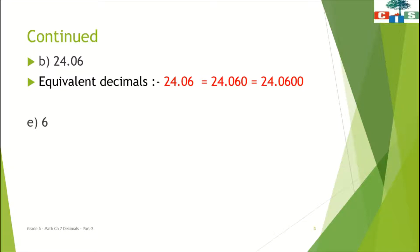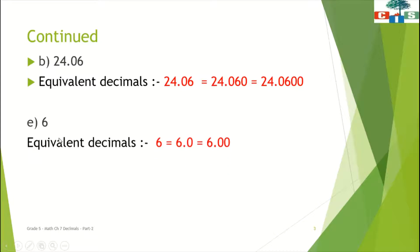You have to just put zero after the last digit of the fractional part. Now here we have just one whole number that is 6. We have to find the equivalent decimal for 6. The equivalent decimals for 6 are 6.0 — first equivalent decimal — and 6.00 — second equivalent decimal. Equivalent decimals means numbers that have the same value: 6.0, 6.00, and 6 all have the same value.